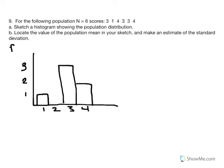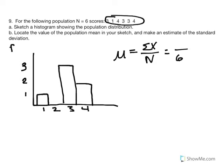Now we calculate the population mean. Mu equals the sum of x over N. We have N equal to 6 scores. Taking the summation: 3 plus 1 plus 4 plus 3 plus 3 plus 4 equals 18. So the average score for this population distribution equals 3. Mu is equal to 3.